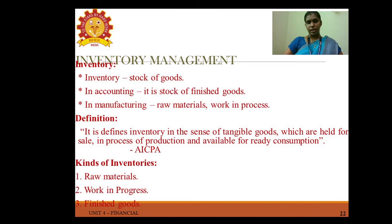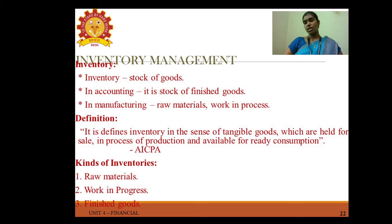Inventory management: inventory is stock of goods. In accounting it is stock of finished goods; in manufacturing it includes raw materials and work in process. Inventory is defined as tangible goods held for sale, in the process of production, or available for ready consumption. Kinds of inventories: raw materials, work in progress, and finished goods.